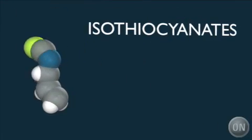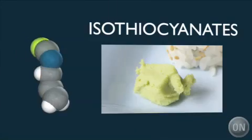There are two groups of pungent plants. One that creates chemicals called isothiocyanates, which are found in mustard plants, horseradish, and wasabi.